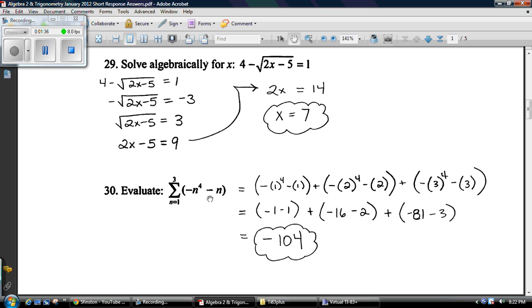30. You're just going to start at 1 and plug in integers up to whatever it is that tells you up over here. That's 3. So you plug in 1 here and 1 here, and then you add it to 2 plugged in here and here. Then you add that to 3 plugged in here and here. And then you just find out what the total is.